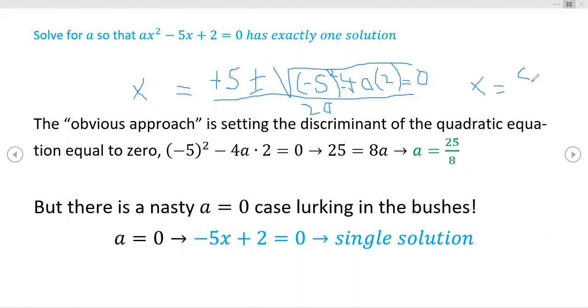You don't really have to write this down, but just for the sake of it. So x = 5 over 2A would be the single solution.